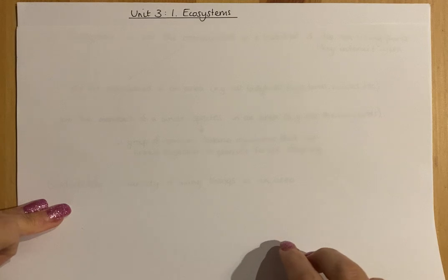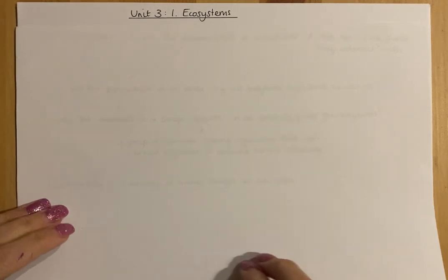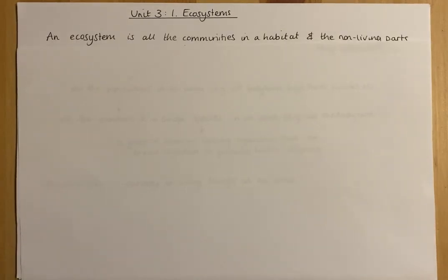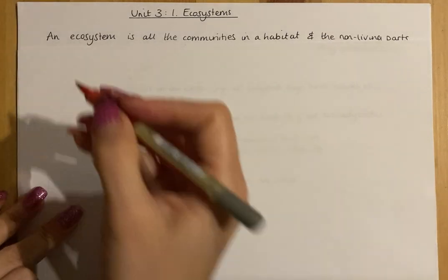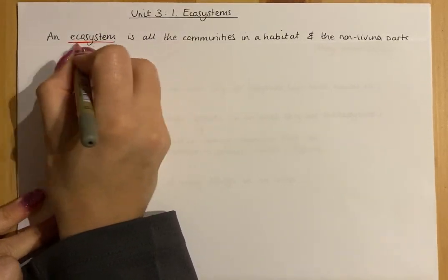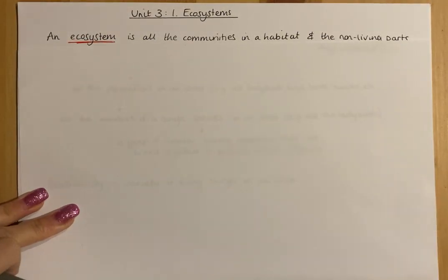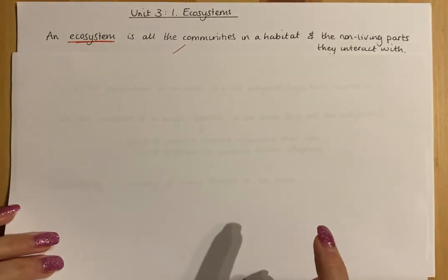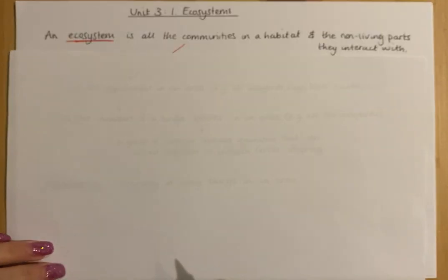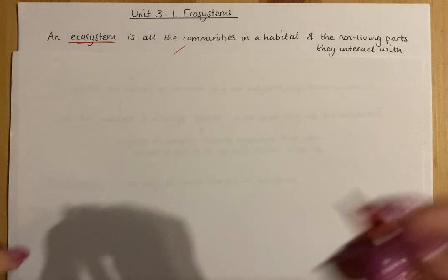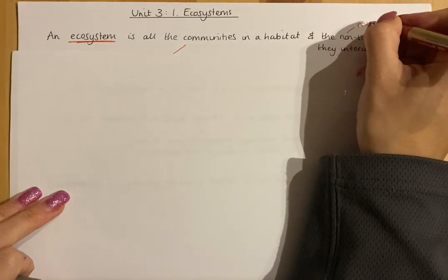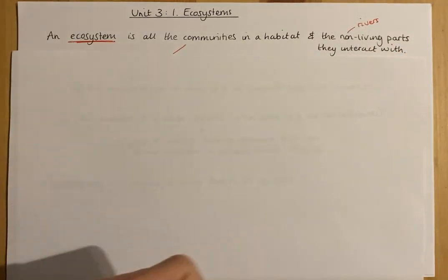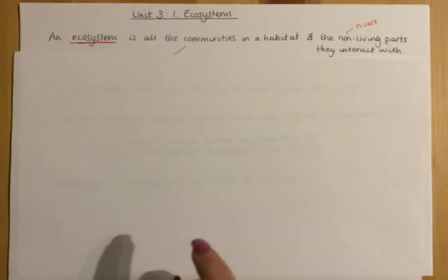The first keyword is ecosystems. An ecosystem is all the communities in an area and in a habitat — which is where an organism lives — and then the non-living parts that they interact with. Those non-living parts are things like rivers, mountains, or stones.